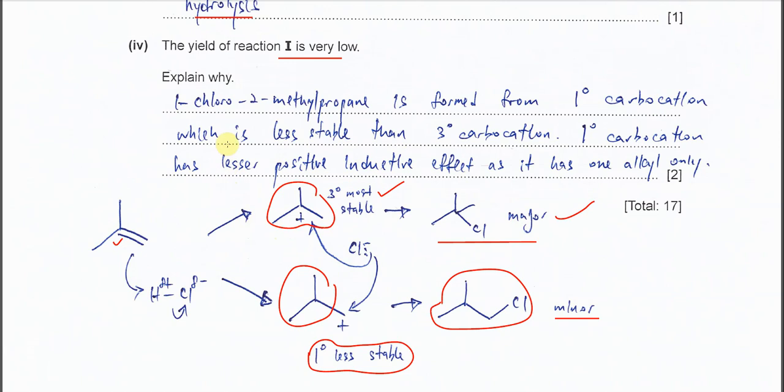So therefore here, this is explanation. 1-chloro-2-methylpropane is formed from, it means this one, this one. Is formed from primary carbocation, which is less stable than tertiary. This is a primary, less stable. The primary carbocation, it has lesser positive inductive effect, as it just has one alkyl group only. That's all for this question. Thank you.